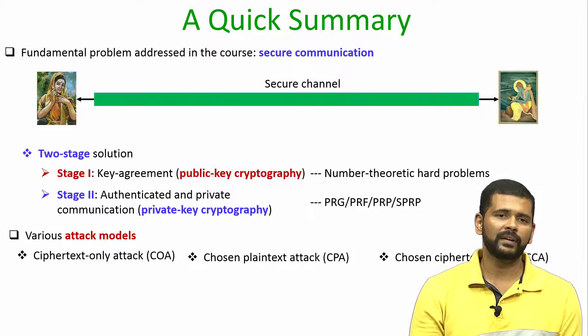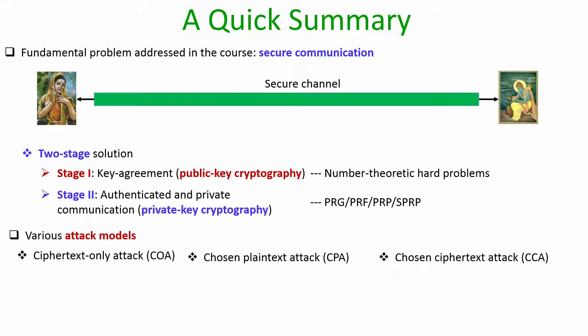We have seen various attack models for both stage one and stage two. For the passive adversarial model, we considered ciphertext-only attack and chosen plaintext attack, whereas for a malicious or active adversary, we considered the chosen ciphertext attack model.